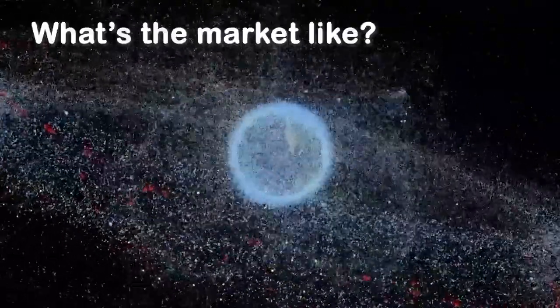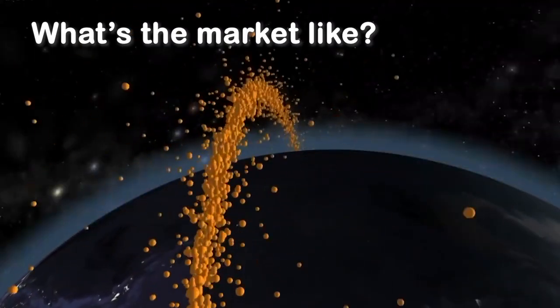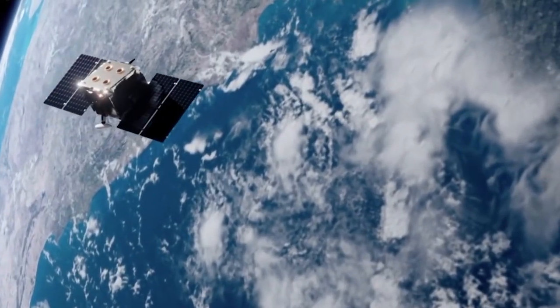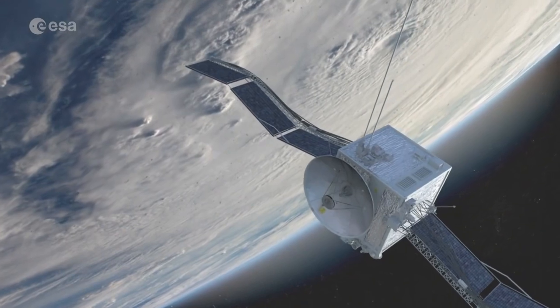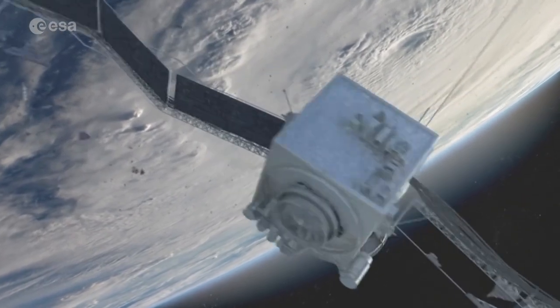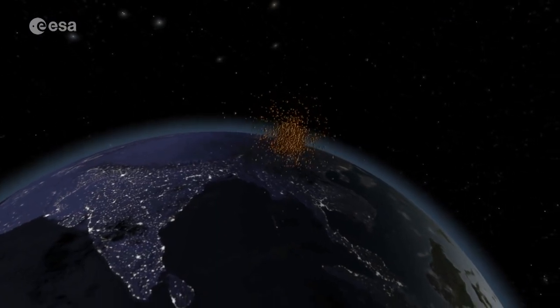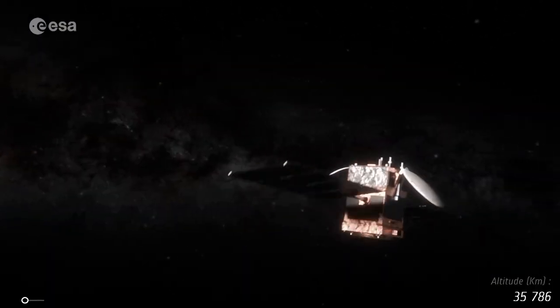What's the market like? According to ClearSpace, there are currently more than 5,000 objects flying around the Earth which could be classified as debris. Every year, approximately 74 new objects become space debris. There are also 3,400 active satellites which will sooner or later go out of use.